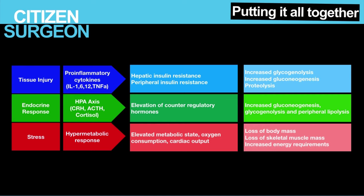When we put everything together, we have tissue injury, the endocrine response, and stress. Tissue injury leads to pro-inflammatory cytokines, which lead to many things including hepatic and peripheral insulin resistance, as well as glycogenolysis, proteolysis, and gluconeogenesis. The endocrine response of injury starts with CRH, followed by ACTH and cortisol, which leads to downstream effects including gluconeogenesis, glycogenolysis, and peripheral lipolysis. Finally, stress contributes to the hypermetabolic response through catecholamines with loss of skeletal muscle mass. All of these processes are interdependent in the inflammatory response.